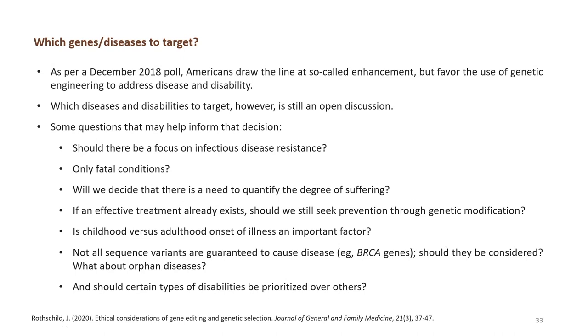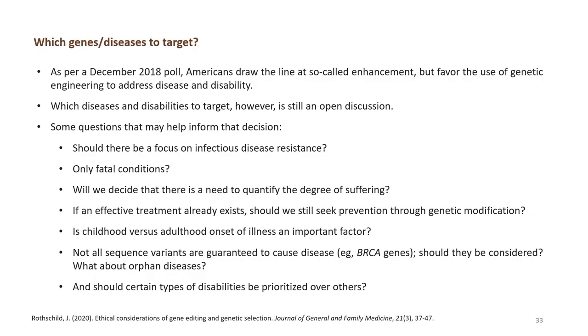Some of the questions that may help inform those decisions are: should there be a focus on infectious disease resistance, or whether only fatal conditions are to be considered? Will we decide that there is a need to quantify the degree of suffering? If an effective treatment already exists, should we still seek prevention through genetic modification? Is childhood versus adulthood onset of illness an important factor? Not all sequence variants are guaranteed to cause disease — should they be considered? What about orphan diseases? And should certain types of disabilities be prioritized over others?